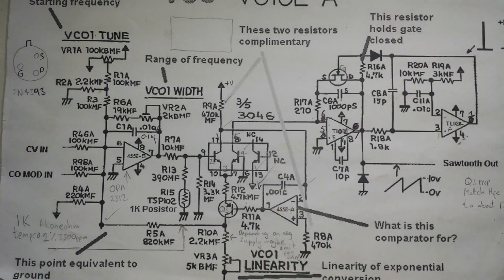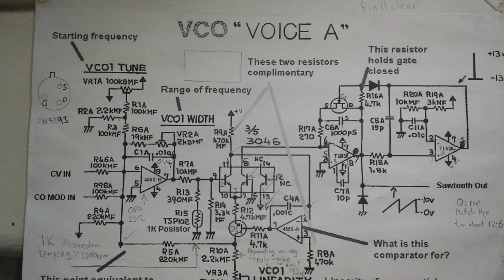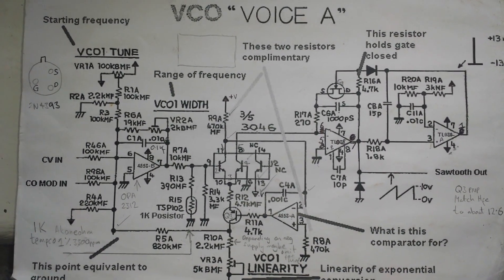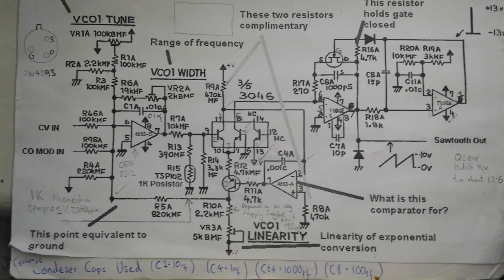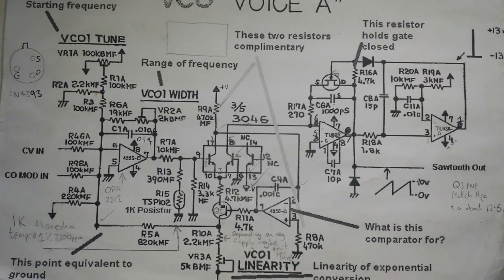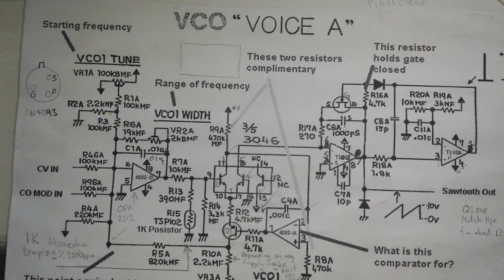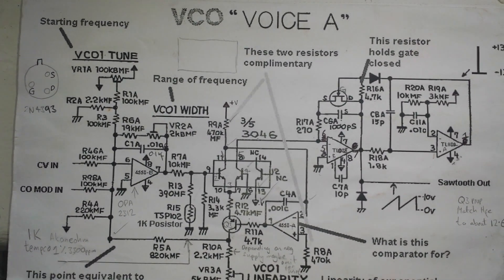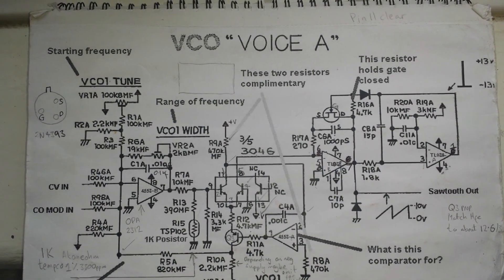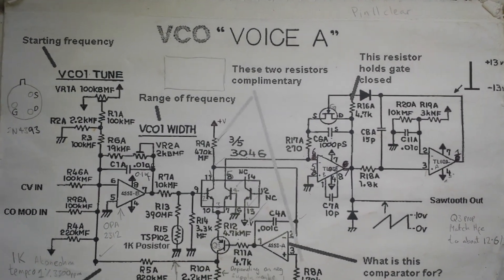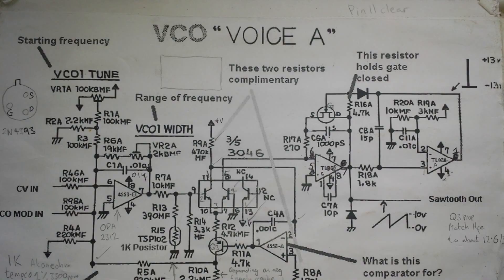So basically what do we have here, this is taken from the Jupiter 8 VCO schematic. And this is also used by a few other things like the Roland system 100. Now I wasn't the guy who actually created this schematic, there's a thread on Muff Wiggler. I will try and post a link in the description so keep your eyes on that.